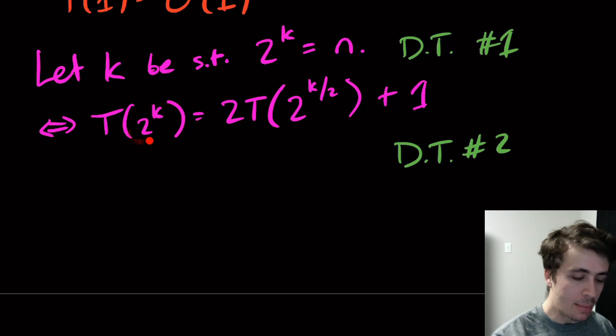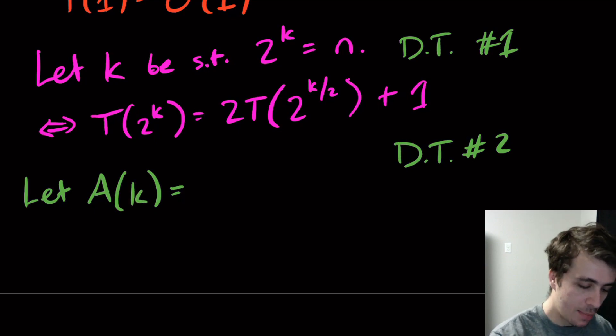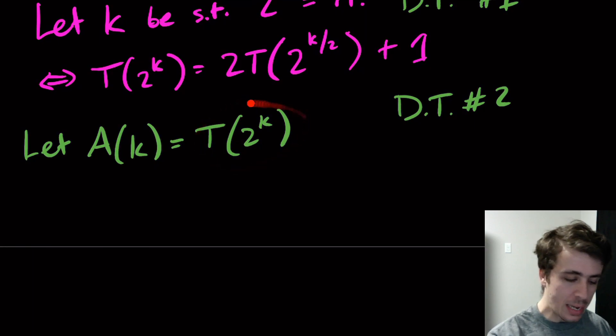Here I'm going to let A(k) be equal to T(2^k). So whatever this crazy function is, I'm going to call it A(k). So A is a completely different function.